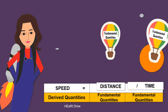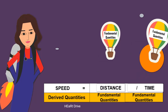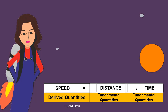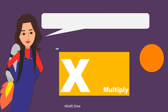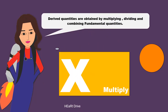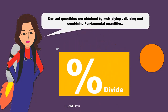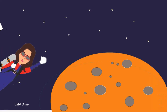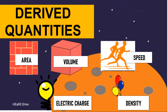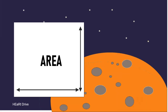Any quantity which is a combination of fundamental quantities is called a derived quantity. In general, derived quantities are obtained by multiplying, dividing, or combining fundamental quantities. Examples of derived quantities are area, volume, speed, electric charge, and density.